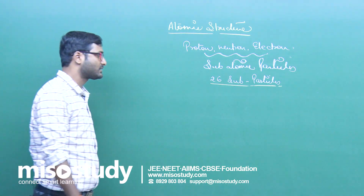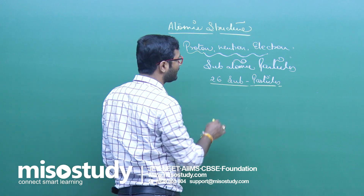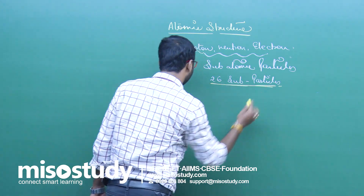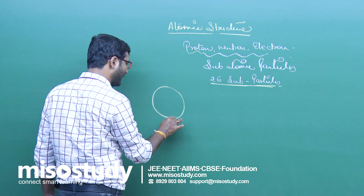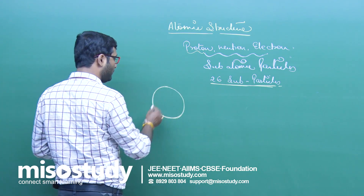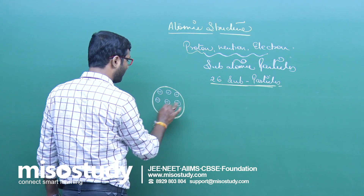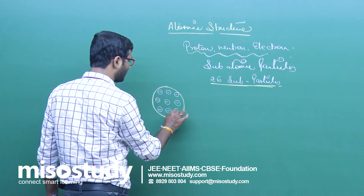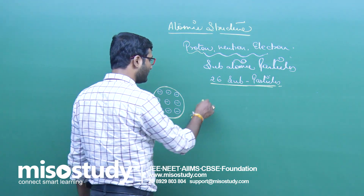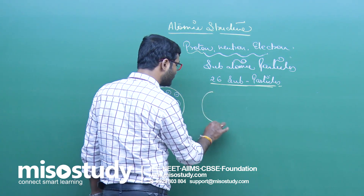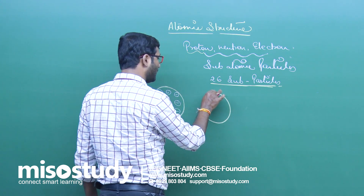Many scientists have given models to show the position of proton, neutron, and electron in an atom. First, the Thomson atomic model. We all know the atom is a positively charged sphere in which electrons are embedded. This is the Thomson atomic model, but it could not give complete information related to the exact location and exact position of the electron and proton.